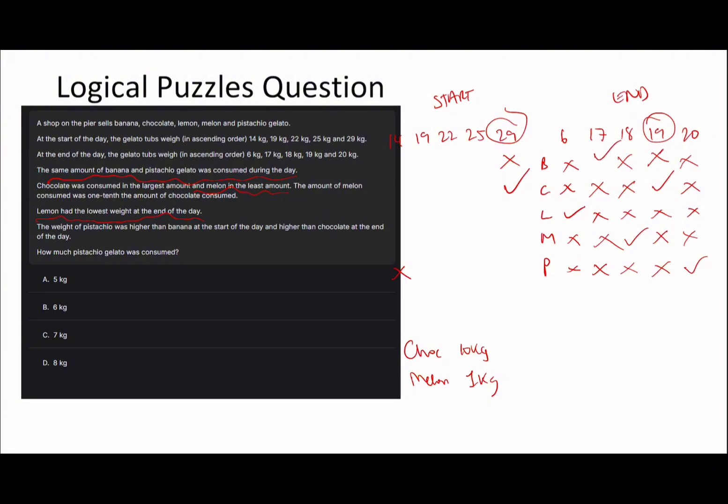You can see everything fills in quite nicely here. I'm just going to cross these out. Because I say the melon was 18 at the end of the day, it must have started as 19, because of that 1 kg thing we were talking about earlier.